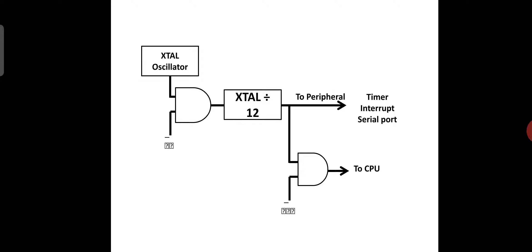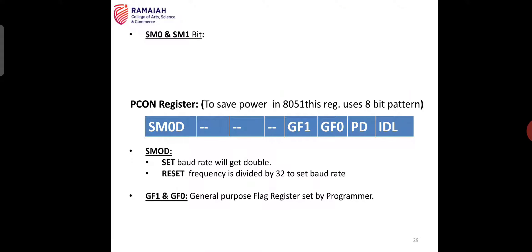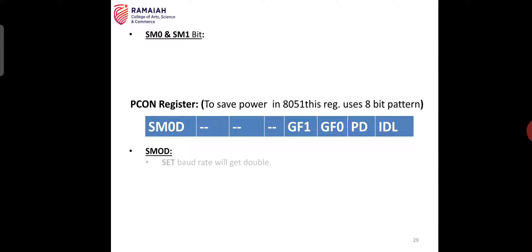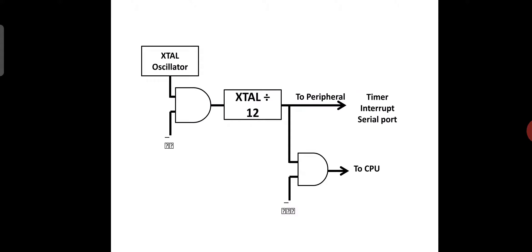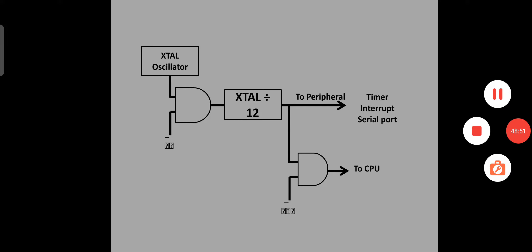This completes unit one of microcontrollers. In this lecture we discussed the various features of the 8051 microcontroller, its pin configuration and architecture, various functional blocks, memory organization, input and output ports, serial communication, timers, and power control modes of the microcontroller. Thank you.